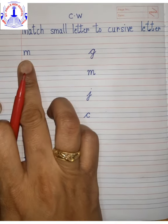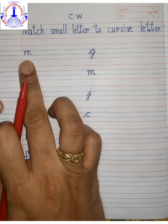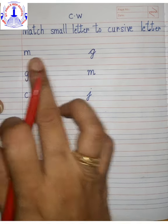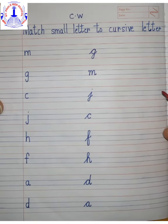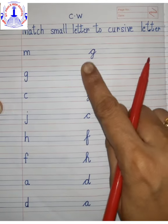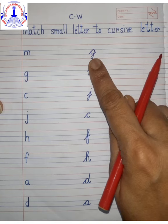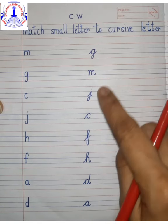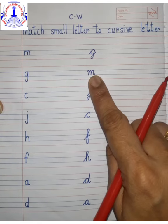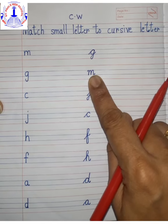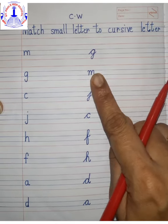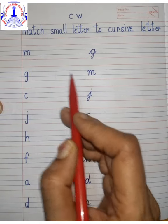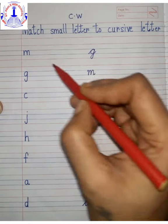Now, which letter is this? This is small letter m. Now we have to search where is cursive letter m. Is this cursive letter m? No. Is this cursive letter m? Yes. So we will match small letter m to cursive letter m.